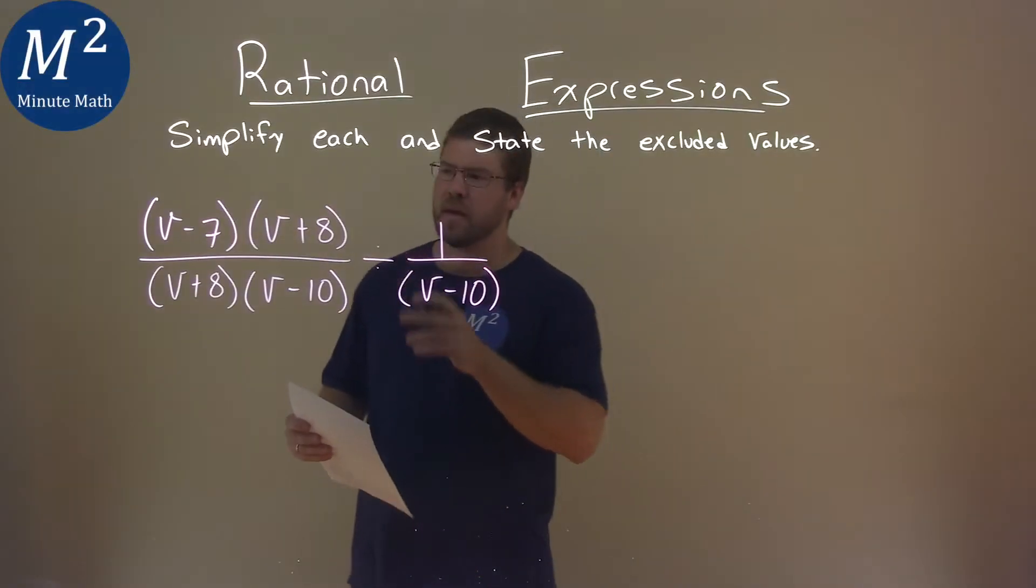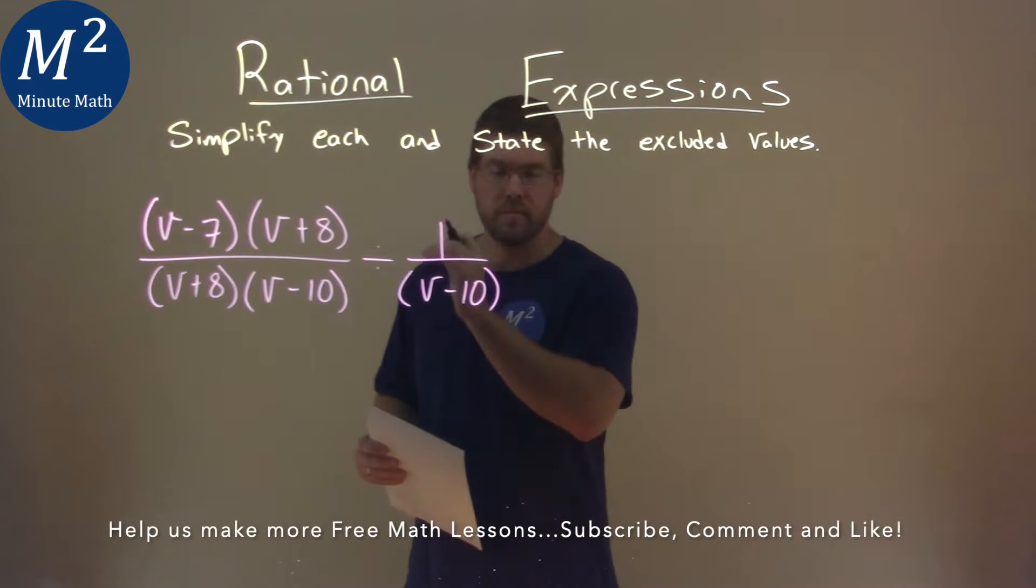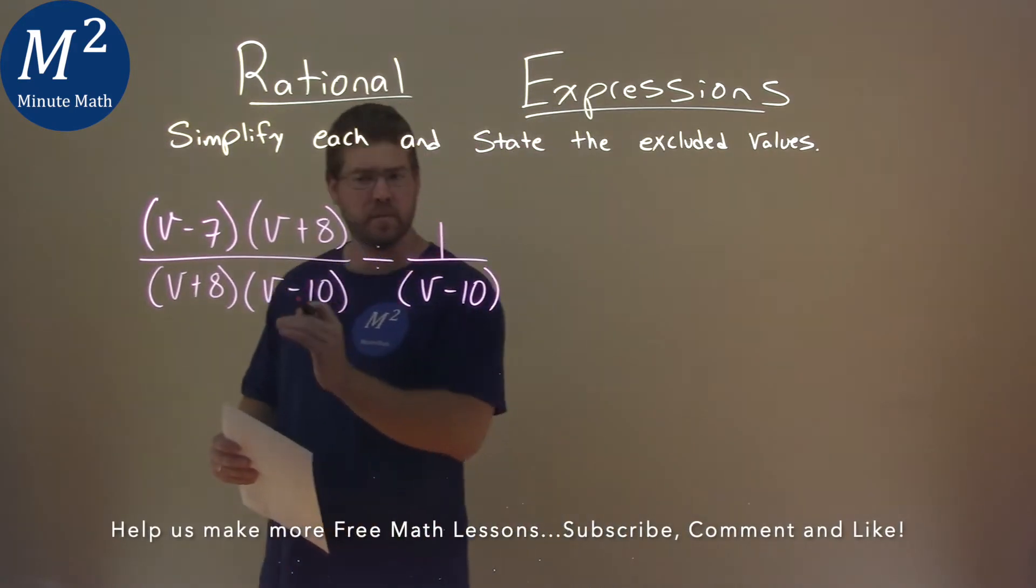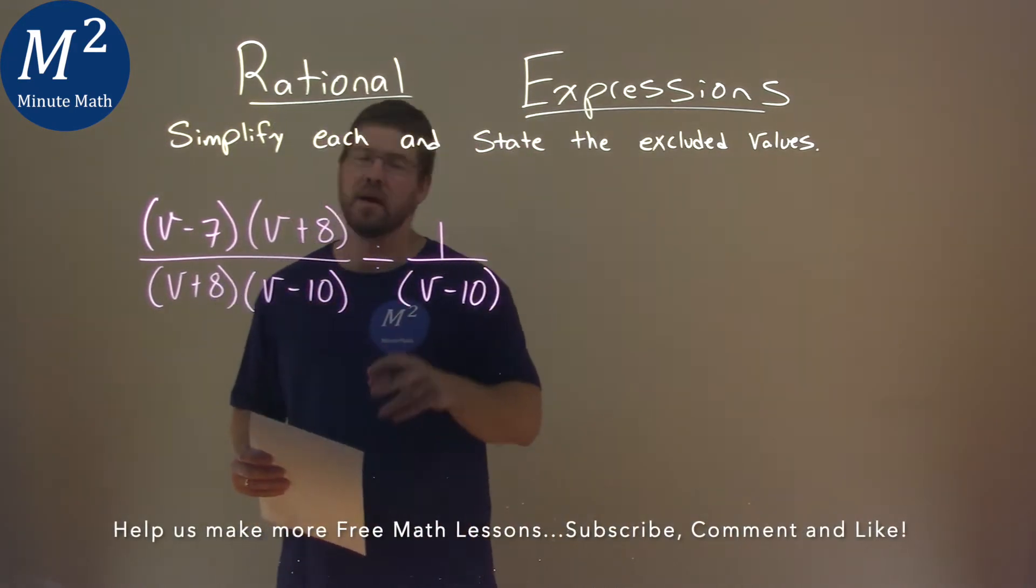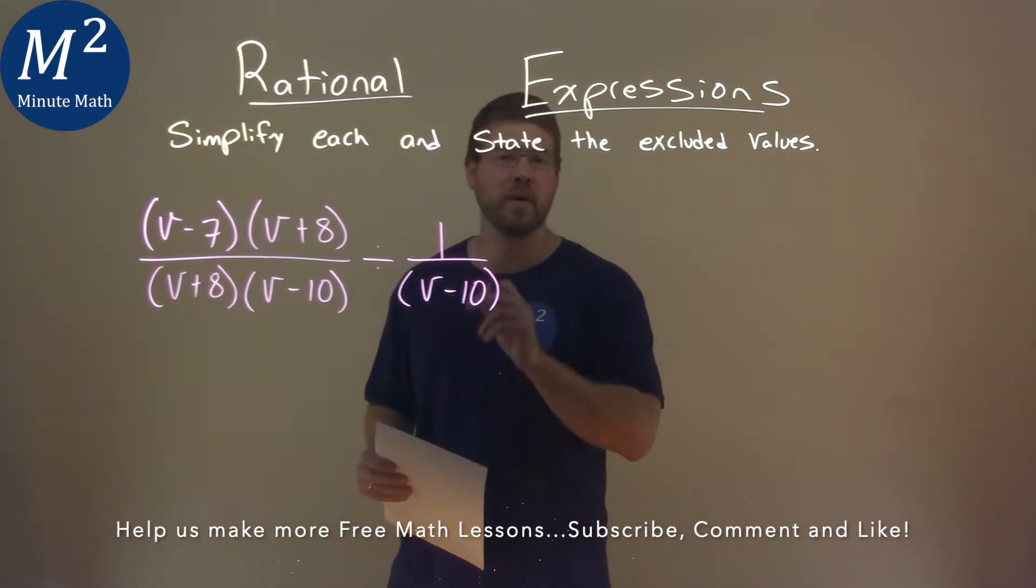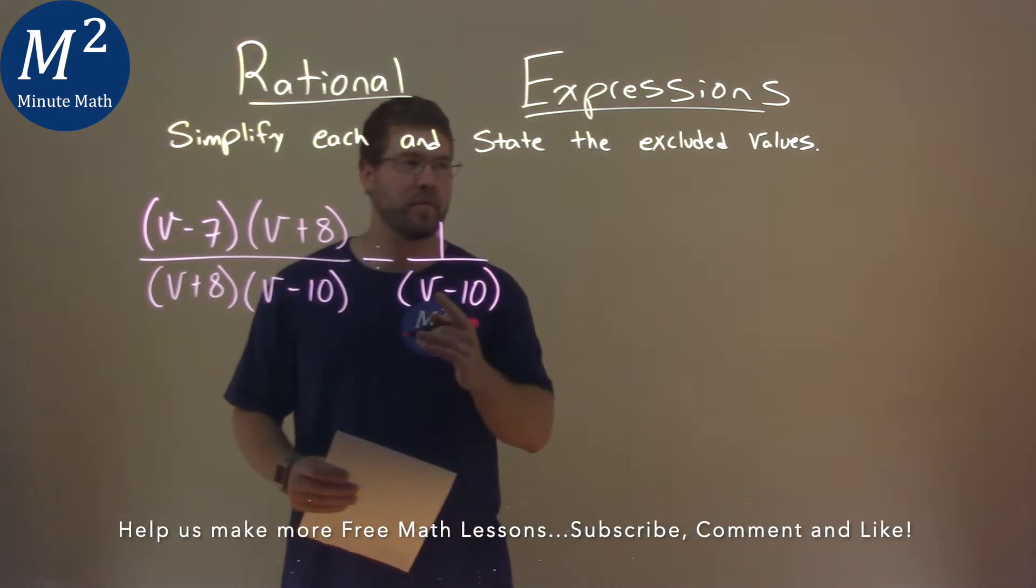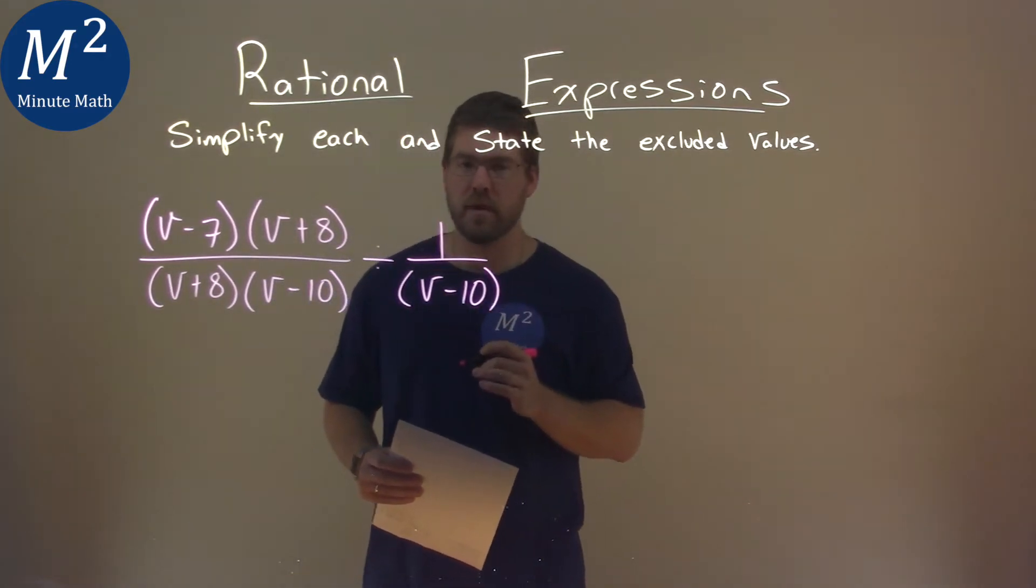We're given this problem right here: v minus 7 times v plus 8 over v plus 8 times v minus 10 divided by 1 over v minus 10, and we have to simplify this and state the excluded values.